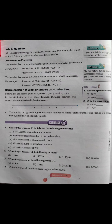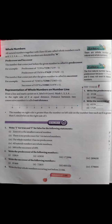Ab hum dekhenge Exercise 2.1 ka first question: write T for true and F for false. First part: '0 is the smallest natural number.' Maine aapko bataya tha ki natural numbers counting numbers hote hain aur 0 ko hum count nahi kar sakte, so 0 smallest natural number nahi hoga — yeh False hai. Hamara smallest natural number 1 hoga.